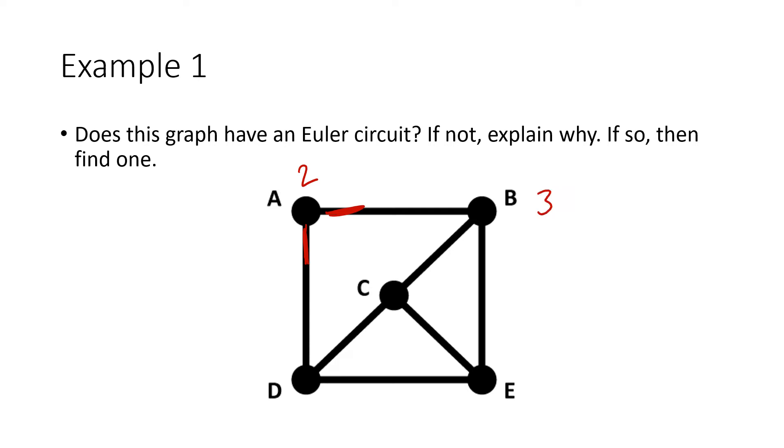For vertex B, that degree is 3, because we've got this one, this one, and this one. Actually, at this point, we could stop, because we know 3 is an odd number. So we could just say vertex B has degree equal to 3, which is odd. So there is no Euler circuit. Euler's Theorem says you only need to have one vertex with odd degree, and you can't have an Euler circuit for the entire graph. It only takes one.